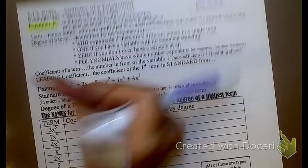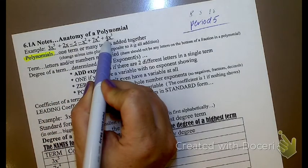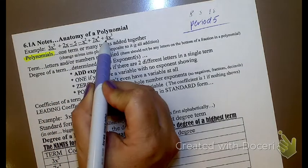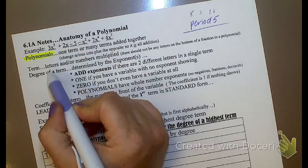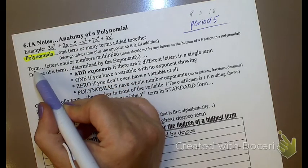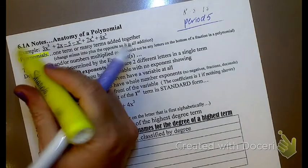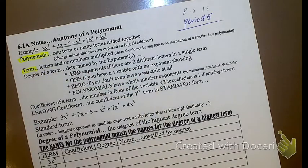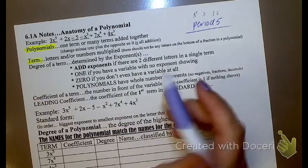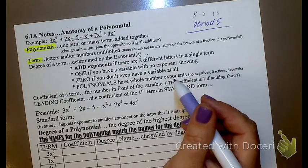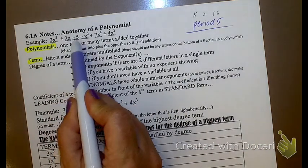So here's an example of a polynomial, right here, and that's the example we're going to be using for this whole page. There are many terms, and if we're talking about the word term, how many terms would you say are in that polynomial? Six. And how did you get those six? It's basically what's in between the plus and minus signs. So I have 1, 2, 3, 4, 5, 6.